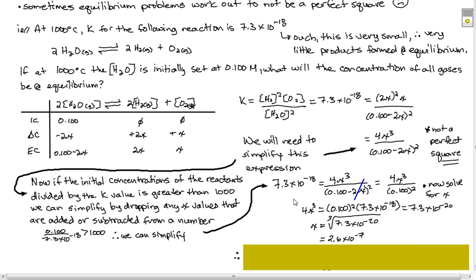So when we simplify, we now get an expression that looks like this: 7.3 times 10 to the minus 18 is equal to 4x cubed over 0.100 squared. Because the change in our initial concentration of water is going to be so small, we can just get rid of the minus 2x part. So now we get a new expression. This is a much easier expression to use. We can easily solve for x. We can only do this if K is really small compared to the initial concentration. So we get 4x cubed is equal to 0.100 squared times K. So all we did was cross multiply. And then we get the value to be 7.3 times 10 to the minus 20. We take the cube root of this and divide by 4, and we get the following answer.